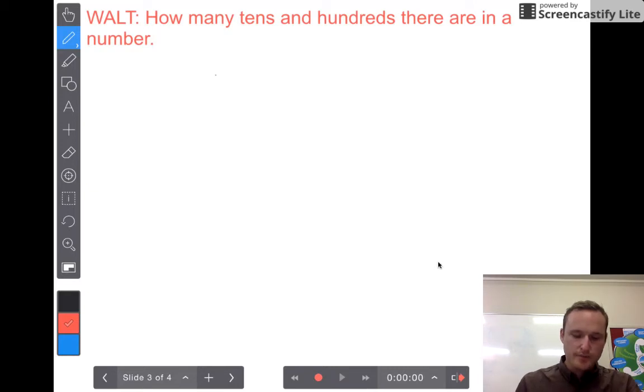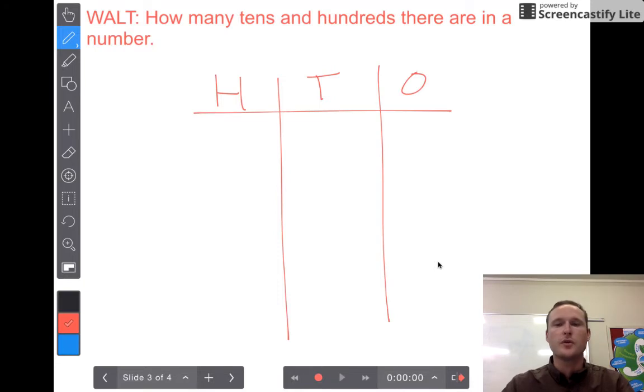I'm going to draw a little table here that looks a bit like this. H for hundreds, a T for tens, and an O for ones. And then draw it up like this. You've probably seen a table that looks like this before. What this is, is a place value table.